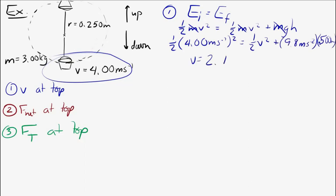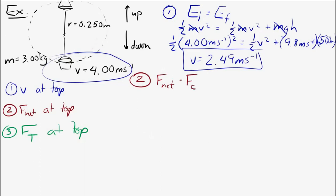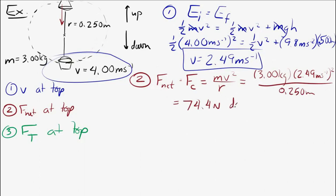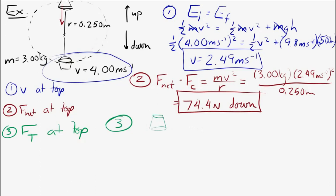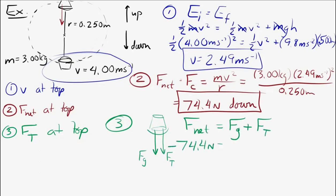Now find the net force at the top. The net force equals the centripetal force: mv squared over r. With our known values, the net force is 74.4 Newtons downward — toward the center at the top. For the tension force: the total force at the top equals weight plus tension, both acting toward the center. The net force of 74.4 Newtons downward equals tension plus weight (m times g). Solving, the tension force is 45 Newtons downward.